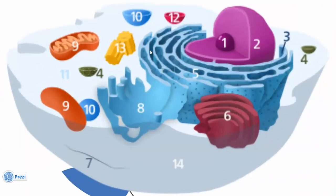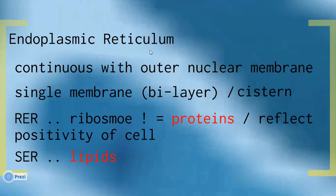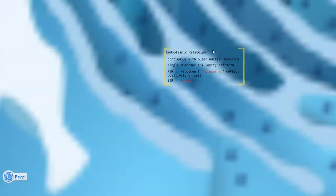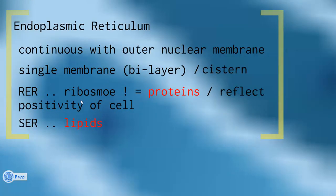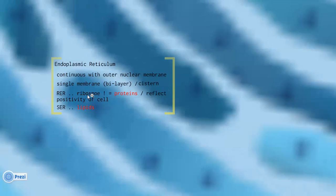Now we will talk about cell organelles, starting with the endoplasmic reticulum. It is a continuation of the outer nuclear membrane and has a single membrane bilayer. The lumen is called a cistern. The rough endoplasmic reticulum is attached with ribosomes, so it is the site of protein formation. The smooth endoplasmic reticulum is for the formation of lipids.